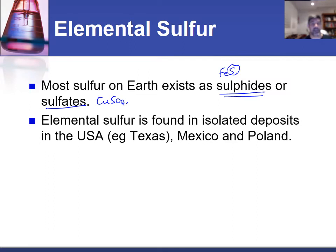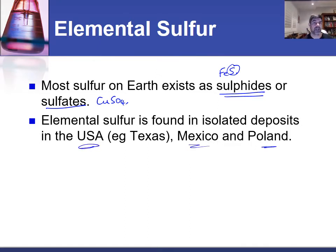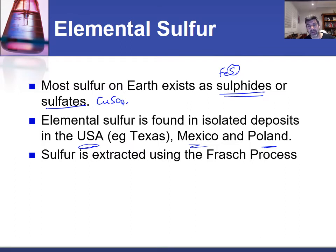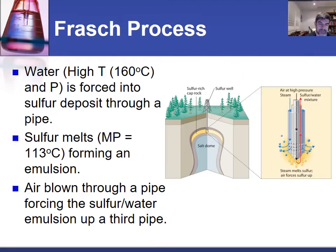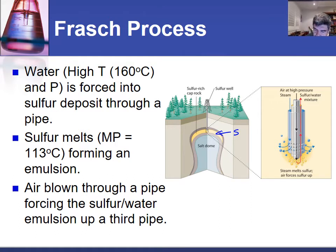Another way of obtaining sulfur is to find it existing as the elemental form, which occurs in certain deposits in the USA, Mexico, and Poland. This is where we can actually extract it and use it in the production of sulfuric acid. In this process, we use the Frasch process, which is one of the processes you need to be able to describe and evaluate. Here you can see that the yellow layer is the elemental sulfur sitting above a salt dome, trapped within these layers.